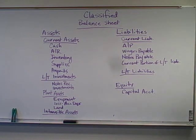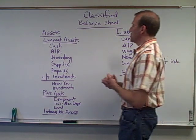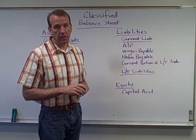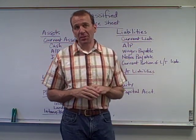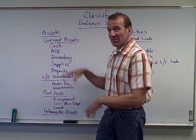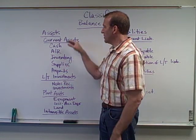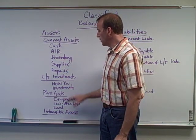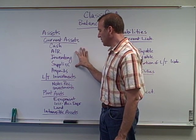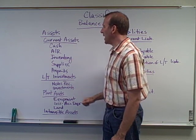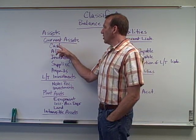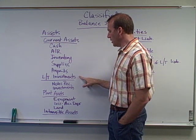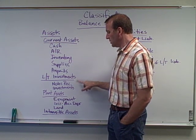Let's continue on with the chapter. We're now going to look at the classified balance sheet. The classified balance sheet doesn't just have assets all labeled — we have different categories that we need to pay attention to and put these accounts in their proper category. For assets, we have current assets, long-term investments, plant assets, and intangible assets.